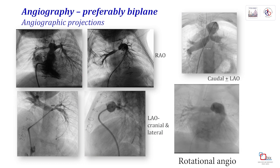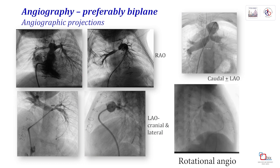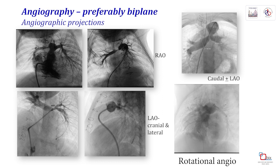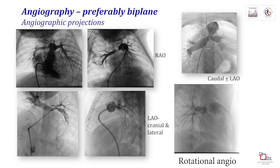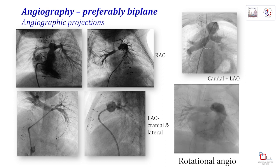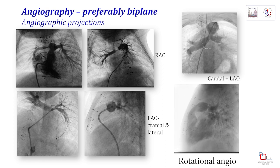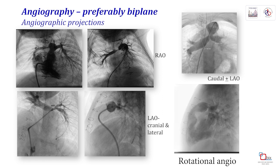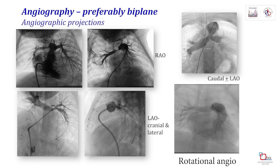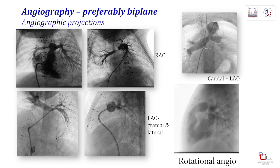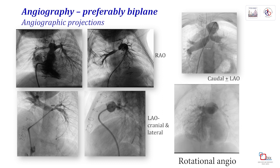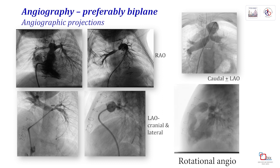PA stenting is often a challenging procedure where good imaging and rapid changes in fluoroscopy projections are important, hence having a biplane system really helps. The commoner projections include, for example, the RAO for the RPA, the allero-cranial and lateral for the LPA, and the deep caudal for bifurcation stenting.